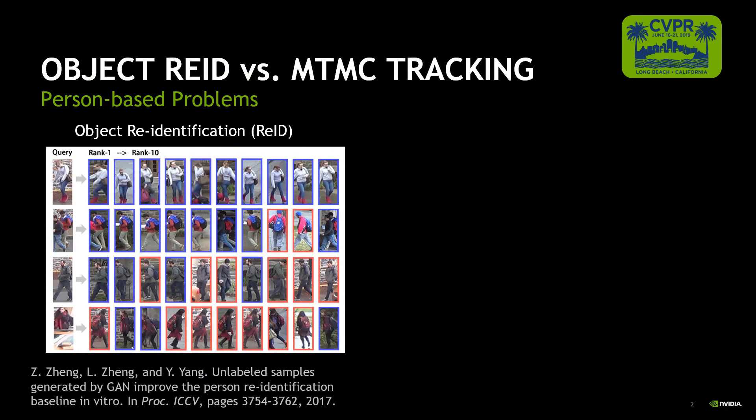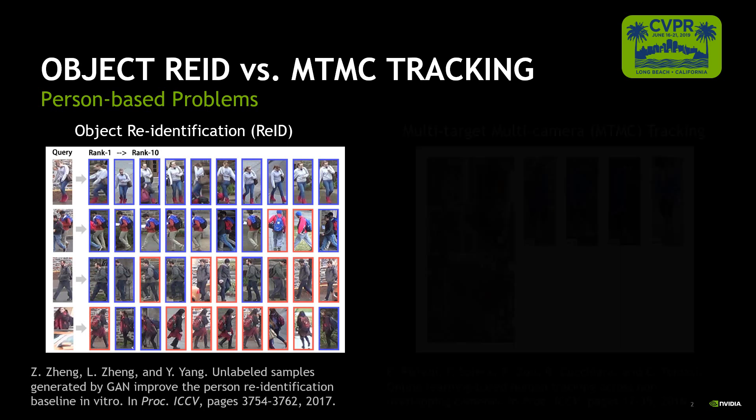Let's start with examples of person-based problems, which have attracted many researchers' attention in recent years. Object re-identification, also known as re-ID: we are given a number of query images, and our goal is to find images of the same identities from a test set, ranked according to their similarity.